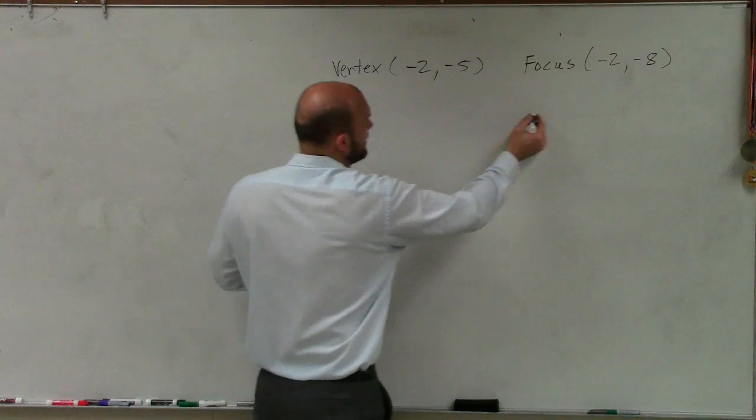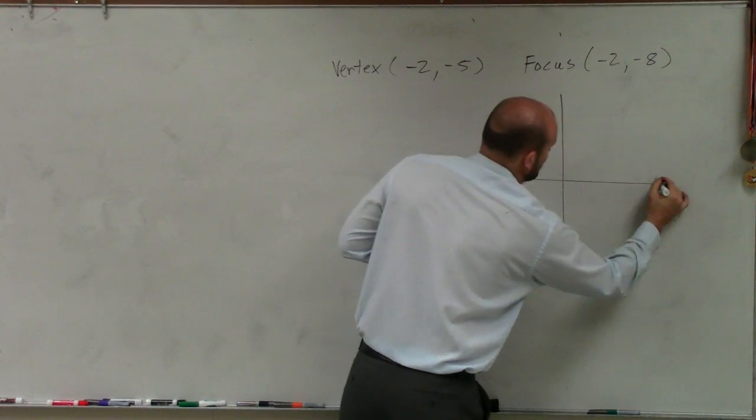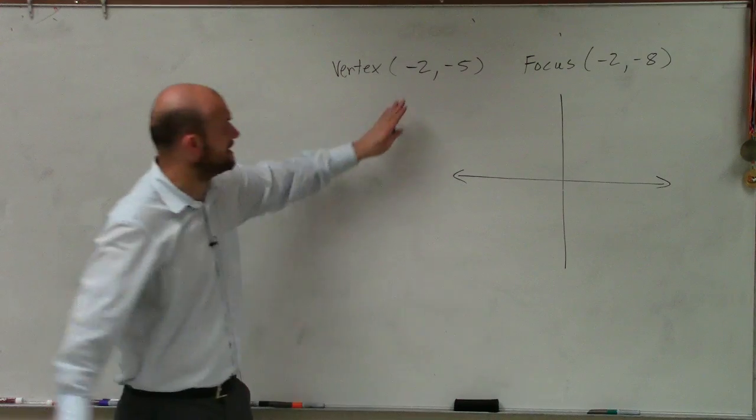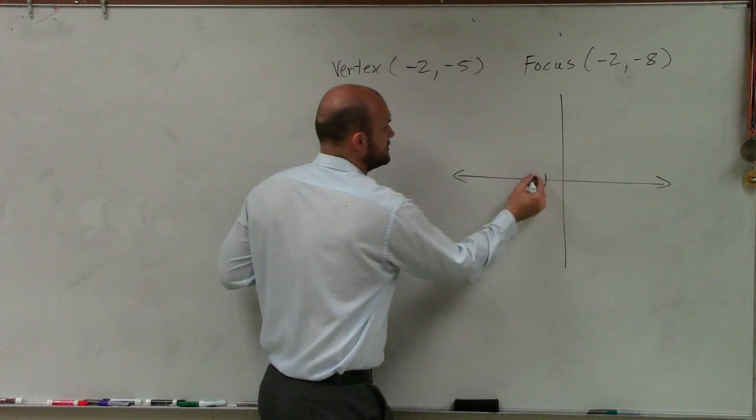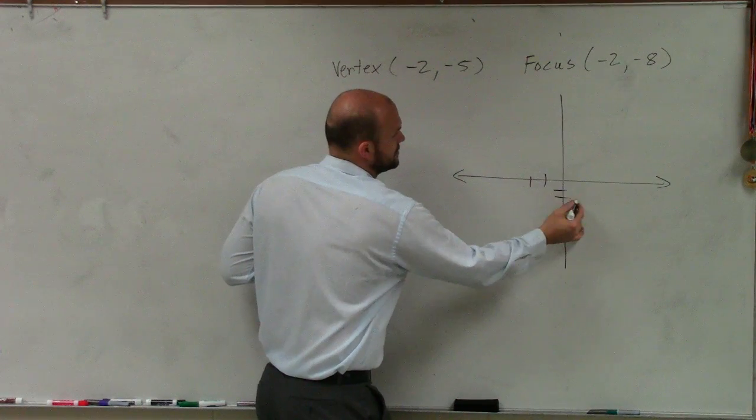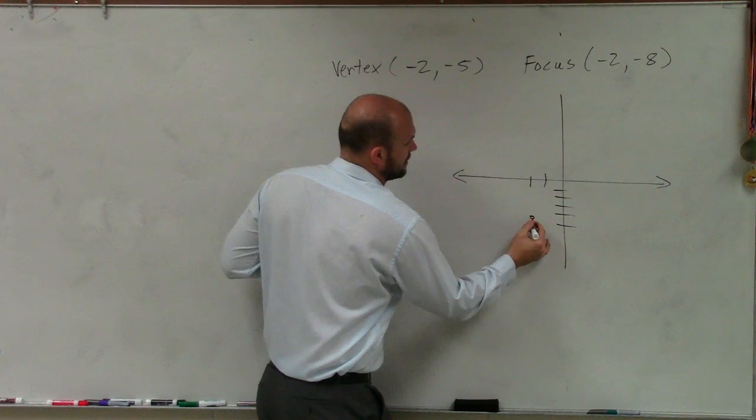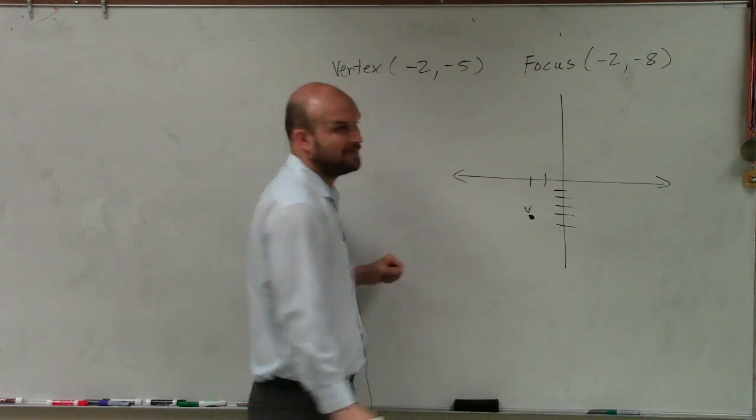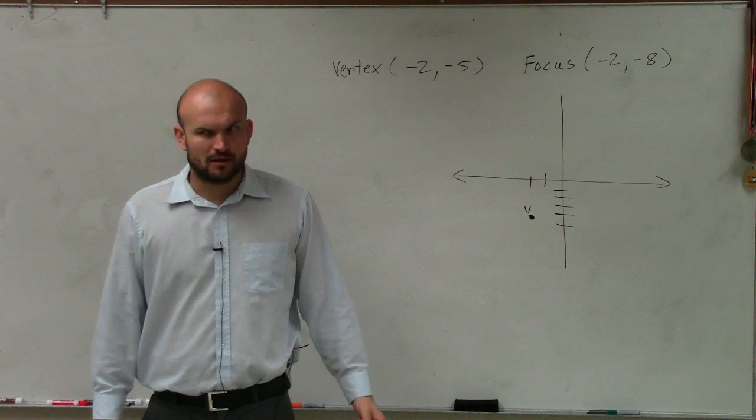So if I graph this, and it tells me that the vertex is at negative 2, 5. Negative 1, 2, negative 5. 1, 2, 3, 4, 5. Does that tell me if my graph opens up, down, left, or right? No.